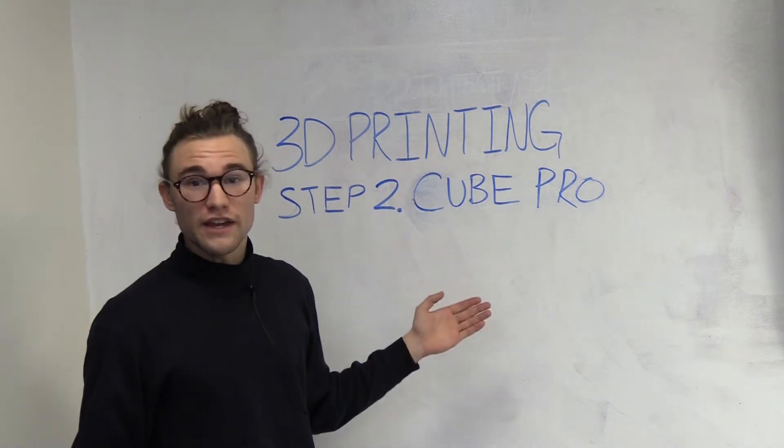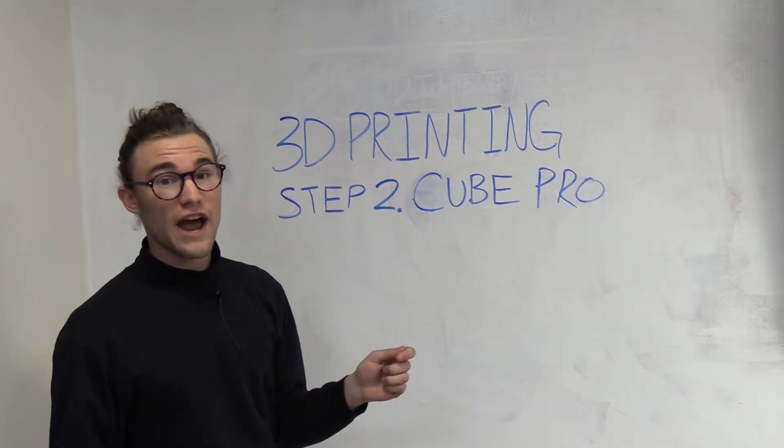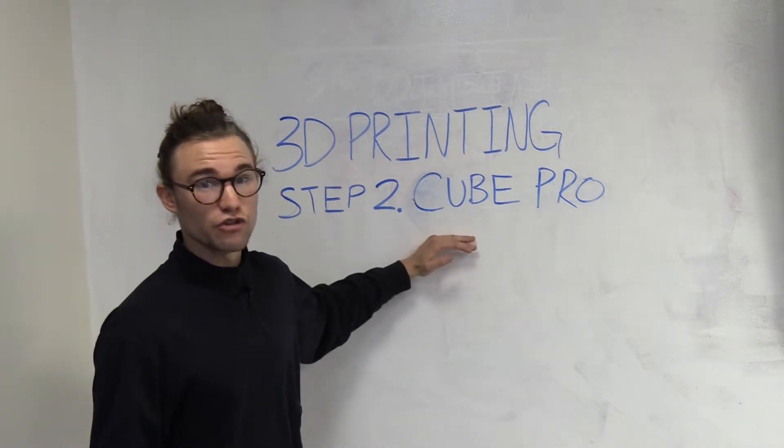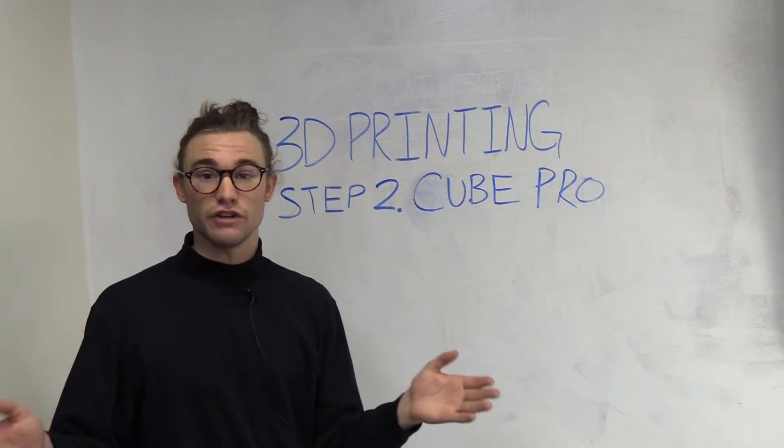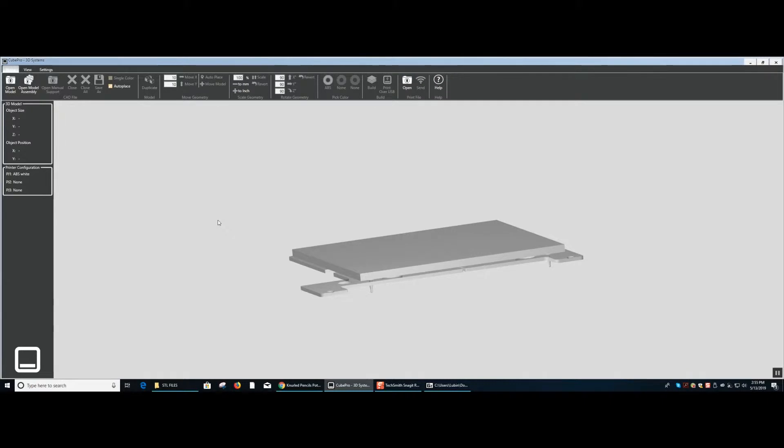Once you obtain the STL file on a flash drive, you are able to drag the STL file into the Cube Pro software enabling the printer to read it. The Cube Pro icon is right here and you can start by opening up that software.